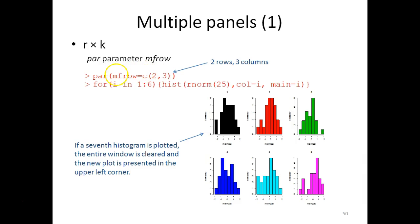After defining the layout you can start plotting, and here we use a loop to produce six histograms with 25 normally distributed values in each histogram.